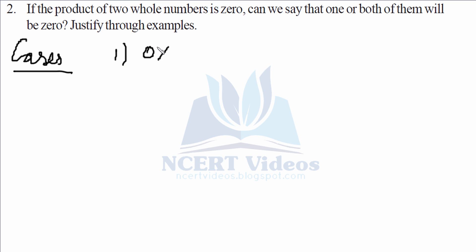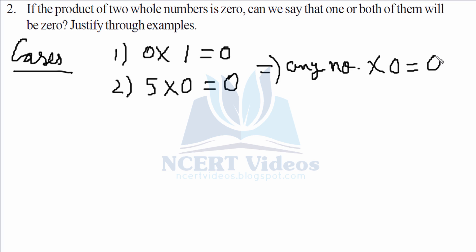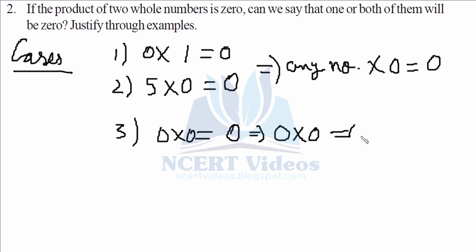Case one: zero into one is always zero. Case two: five into zero is also zero. So either one of them being zero gives a product of zero. We have proved one part. Now if both numbers are zero, the product is also zero. Therefore we can say one or both of them will be zero — one in cases one and two, and both in case three.